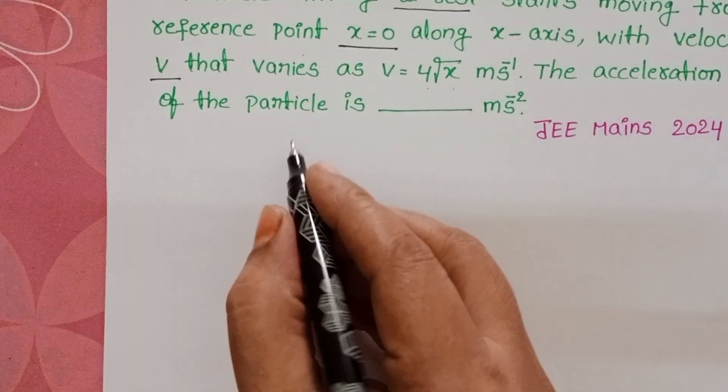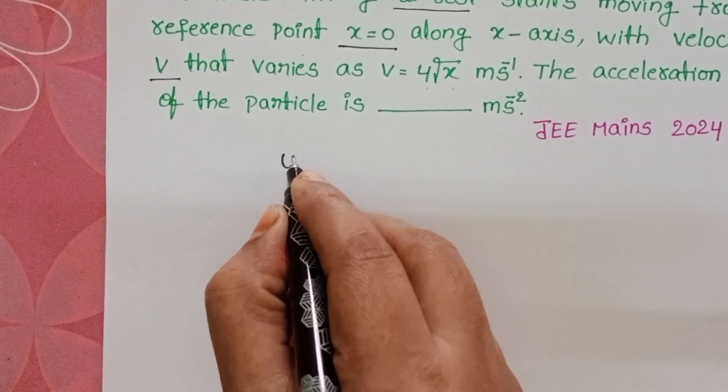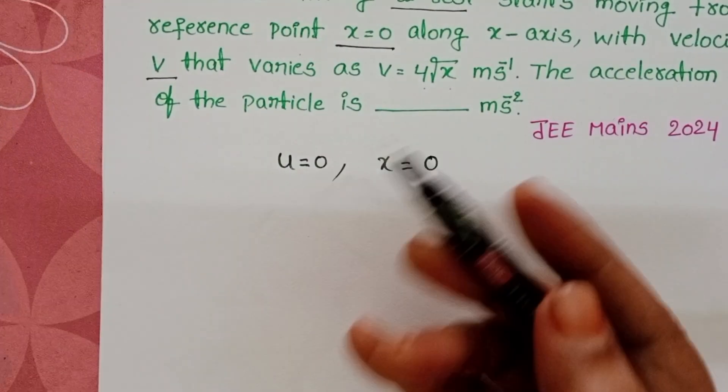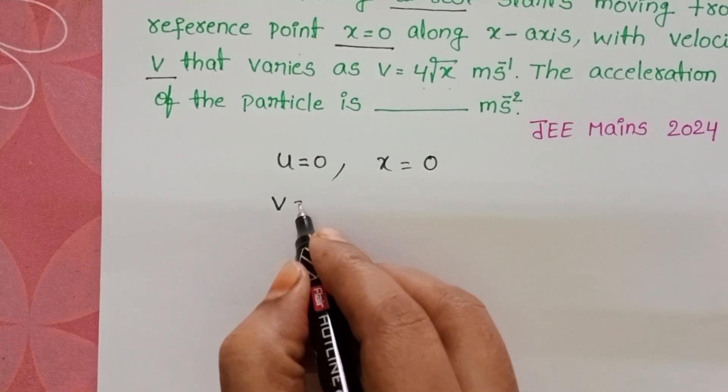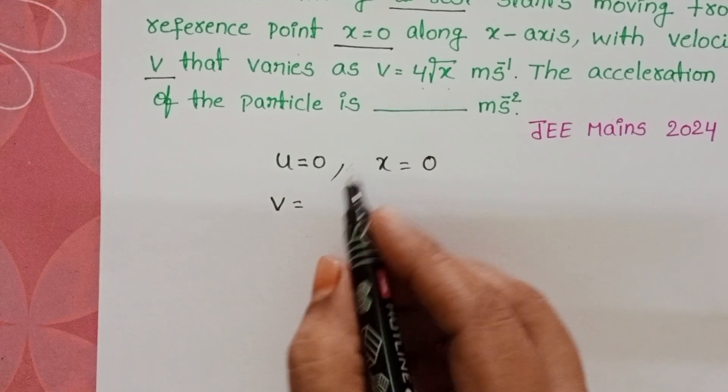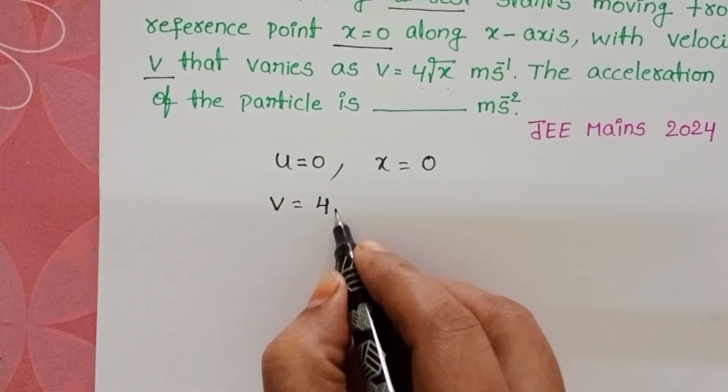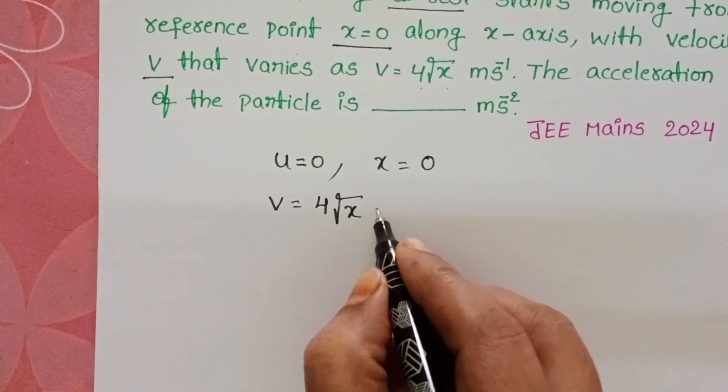Initially the particle is at rest position. u equals 0. After then its velocity varies v equals 4 square root of x meter per second.